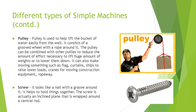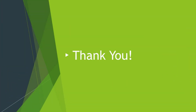The last type of simple machine is the screw. It looks like a nail with a groove around it. It helps to hold things together. The screw is actually an inclined plane that is wrapped around a central rod. You must have seen screws many times at home — they make work easy and help us hang things. A screw is an inclined plane wound around a rod.